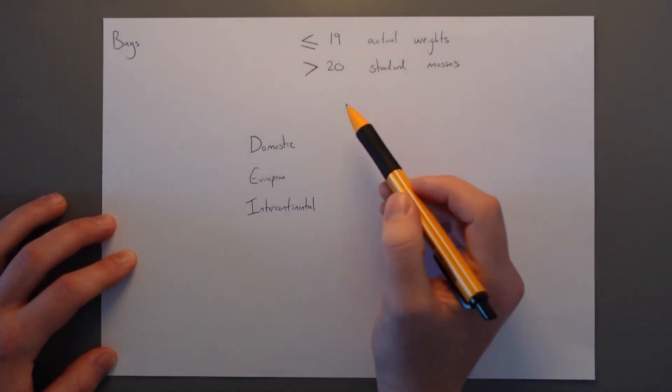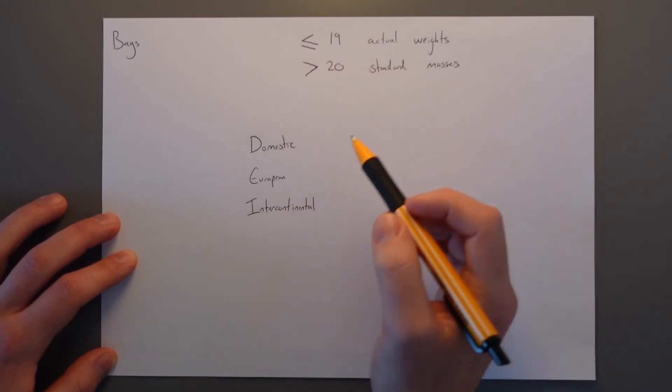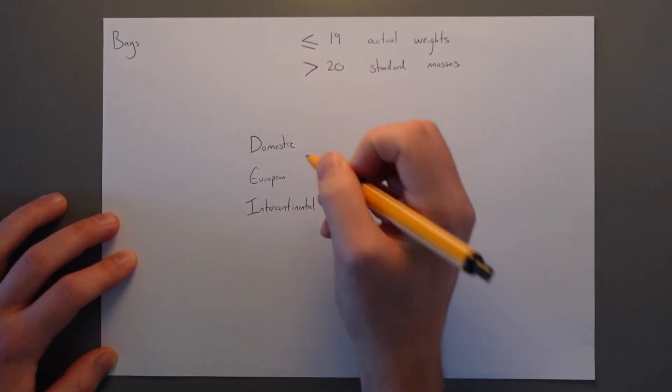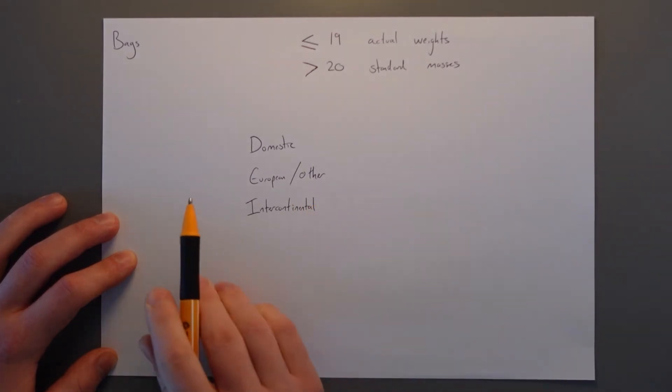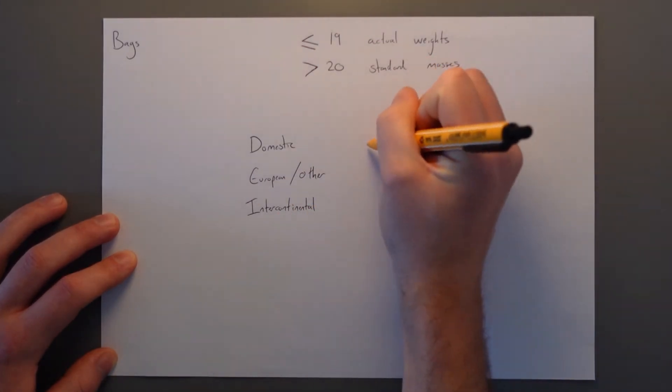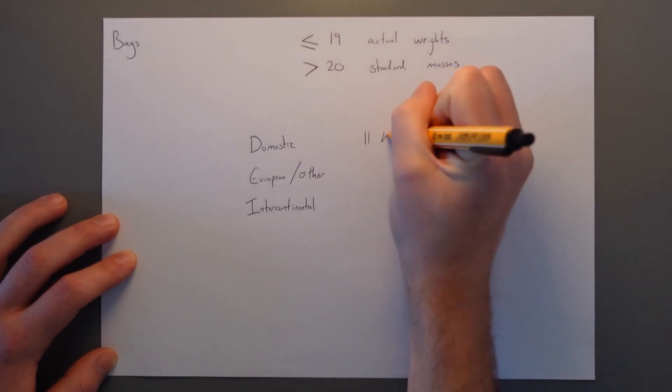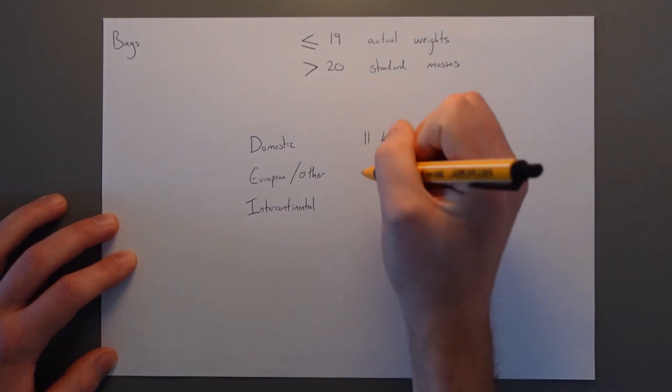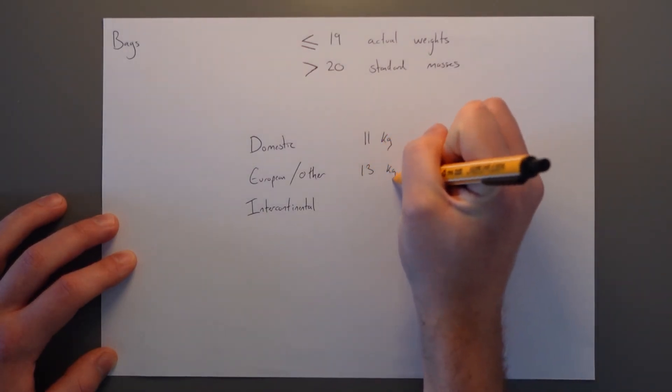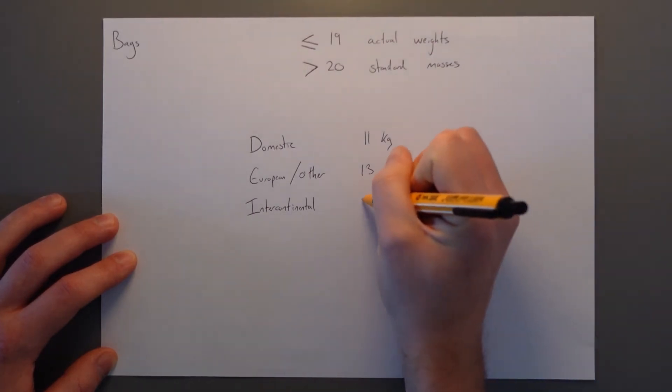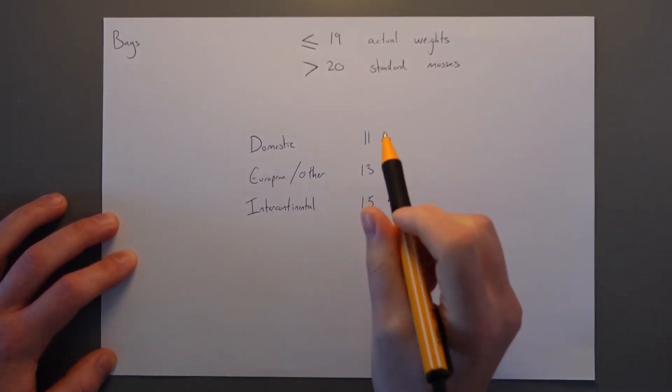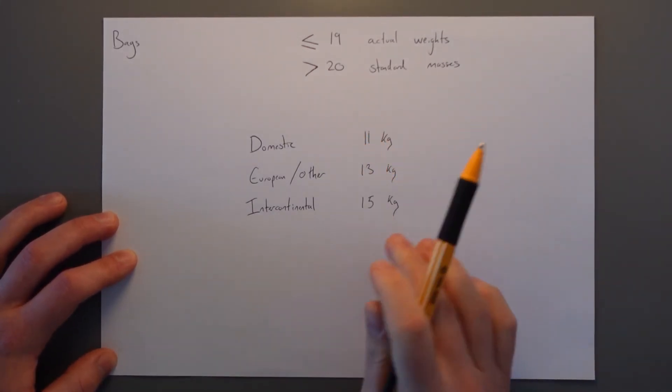So the standard masses on aircraft with 20 or more seats depend on what type of flight you're doing. So you're doing a domestic flight, a European, there's also other, which I'm not really sure what that covers, or an intercontinental. So domestic flight, you have a baggage limit of 11 kgs in the standard masses. European 13 and intercontinental 15. These are your standard masses, but again, most airlines will weigh the bags to optimize the performance.